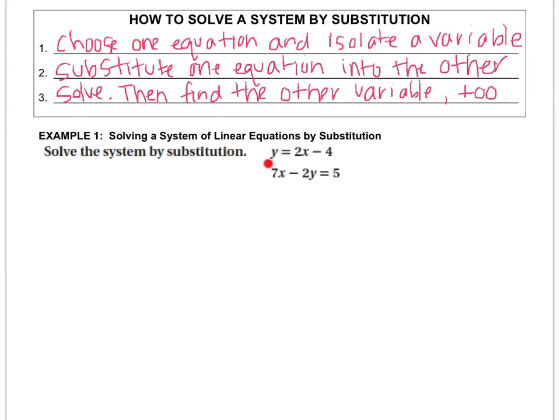So here's how that works. This equation already tells me what the value of y equals. So wherever I see a y, I can plug in that expression. So I'll rewrite the second equation to say 7x minus 2 times what the first equation was, 2x minus 4 equals 5, because instead of y, I'm putting what the first equation told me y equals.